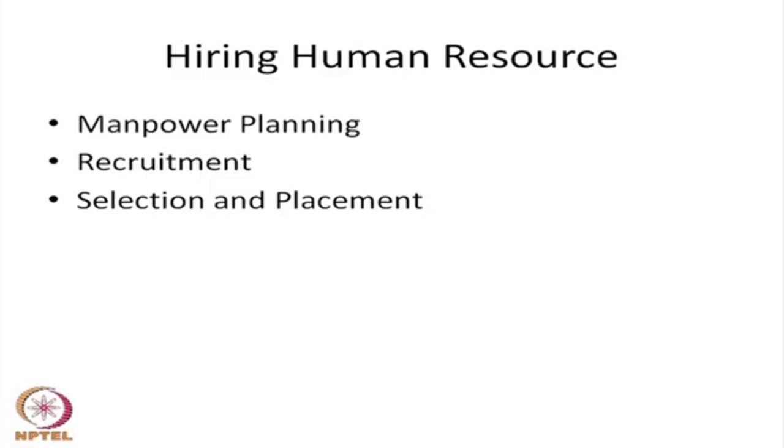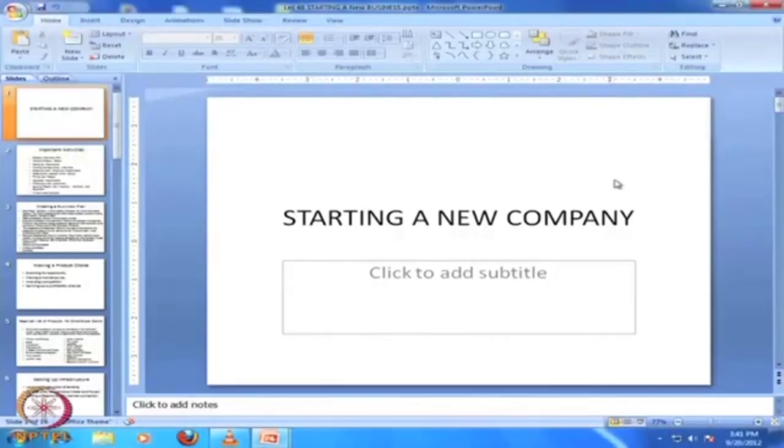So before one starts a business, a thorough plan must be made as to how the business will function, what product it will make, where it will be located, and whether different regulatory provisions are being met and where money will come from. These are all required before submitting the memorandum of association and articles of association to the Registrar of Companies. Upon receiving the certificate of incorporation, a private company can start immediately; if not sufficiently capitalized, it must submit a prospectus or statement in lieu of prospectus, issue shares, and raise capital before starting.